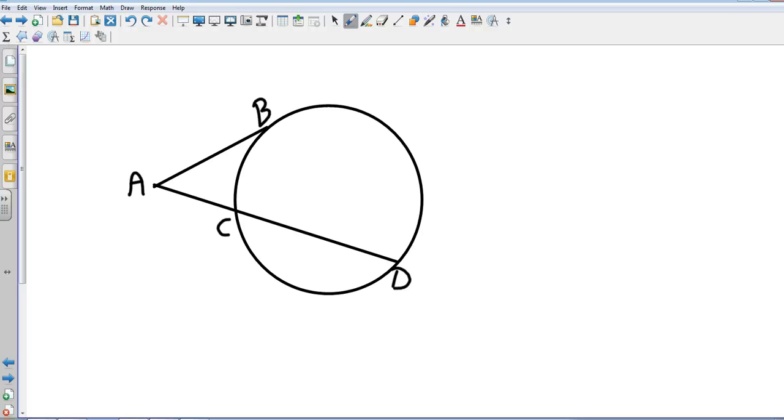The final one, we have a tangent and a secant. And so this one is very specific. In this case we're going to take AB and square it, and that's going to equal the small segment times the entire segment.